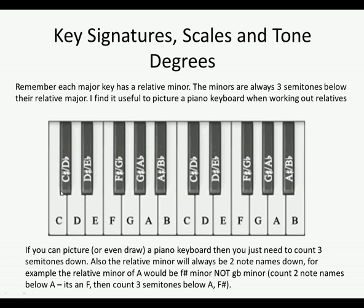In Grade 2 I said that you can work out any relative minor by going down two note names and then going back to the tonic and going down three semitones. For example, C major: go down two note names and you get A, then go down three semitones — one, two, three — it's A.